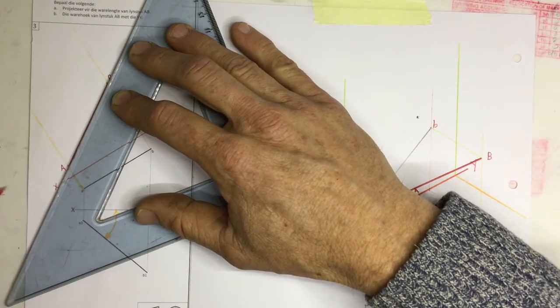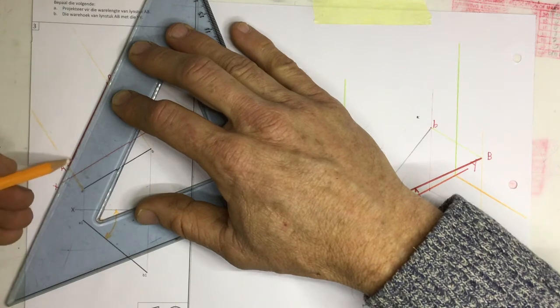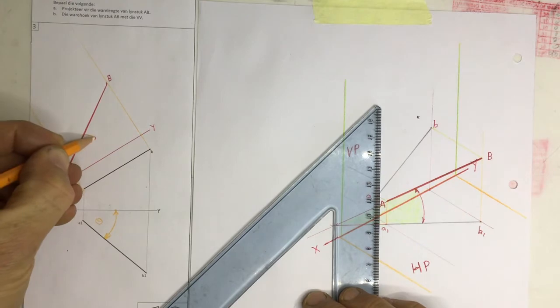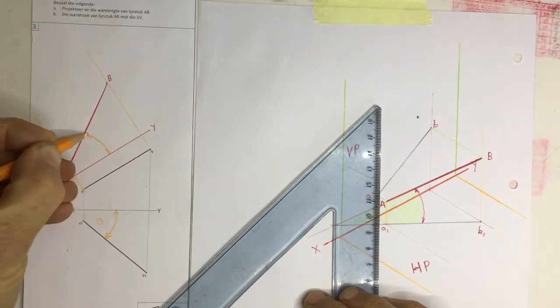Where's my true angle of inclination? Well, I'm just going to draw a construction line coming down here. Can you see this angle in over here? If I measure that with a protractor now, I will be able to find my true angle of inclination.